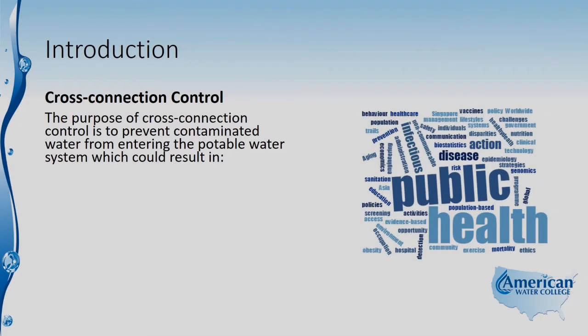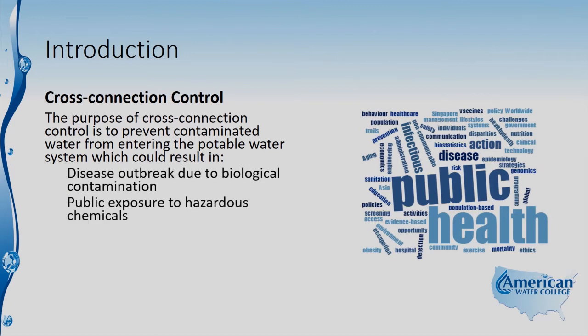The purpose of cross-connection control is to prevent contaminated water from entering the potable water system, which could result in disease outbreak due to biological contamination, or public exposure to hazardous chemicals such as pesticides, and those might come from residential or agricultural situations.